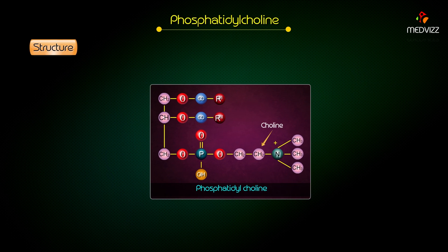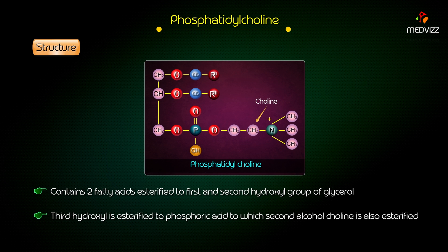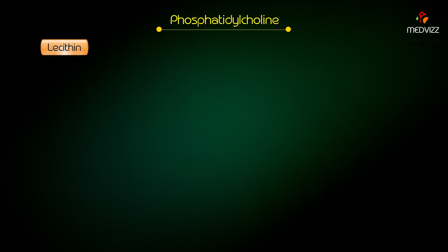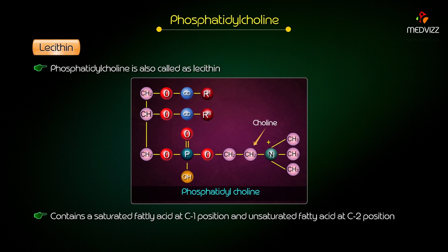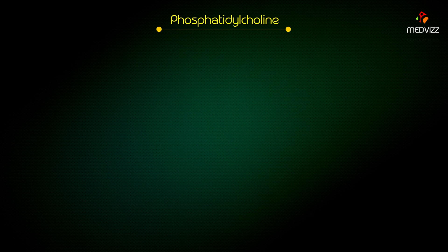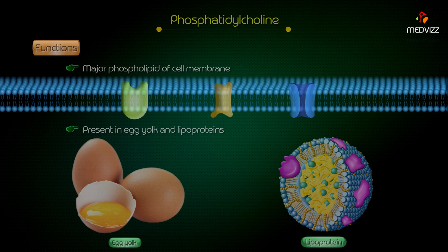Phosphatidylcholine — structure. It contains two fatty acids esterified to the first and second hydroxyl groups of glycerol. The third hydroxyl group is esterified to phosphoric acid, to which the second alcohol, choline, is also esterified. Phosphatidylcholine is also called lecithin. Lecithin contains a saturated fatty acid at the C1 position and an unsaturated fatty acid at the C2 position. Function: it is a major phospholipid of cell membranes, and is also present in egg yolk and lipoproteins.